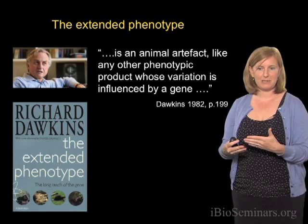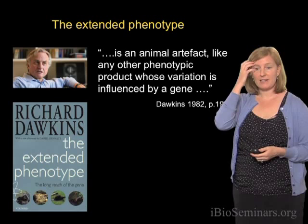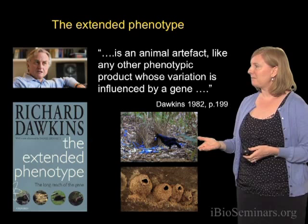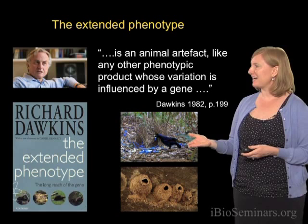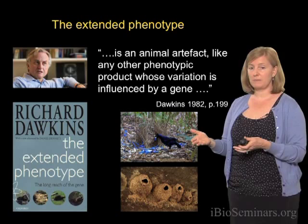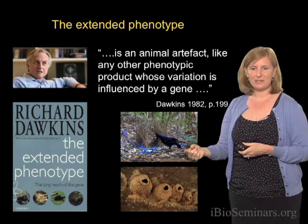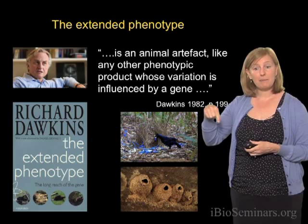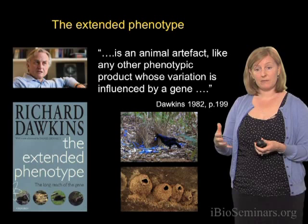Let me illustrate this by giving you two examples of extended phenotypes. The first example I'm showing you here is the Australian Bowerbird, in which the males build these very elegant bowers. The bowers tend to be very similar within a species. This particular species builds a bower by putting reeds together in a U-shape, then decorates it with blue artifacts found in the area. He'll walk back and forth, and this ritual will attract a female. But the shape of the bower differs dramatically between species.